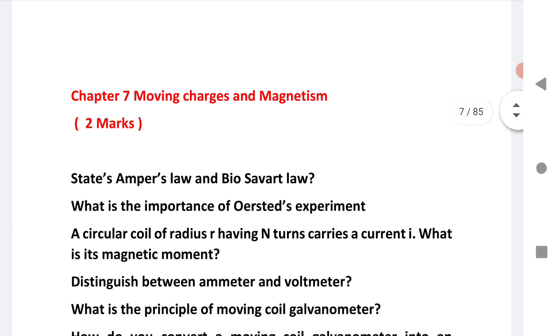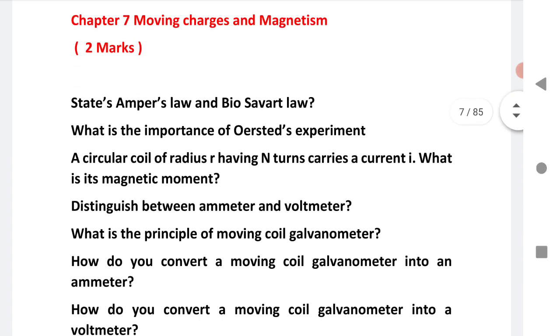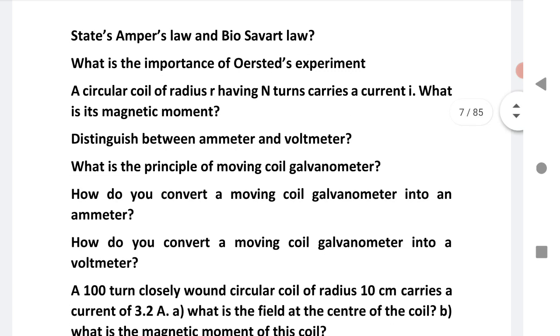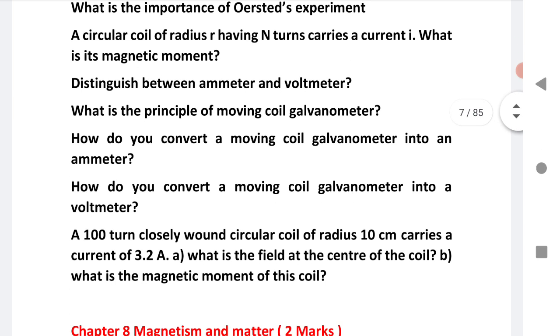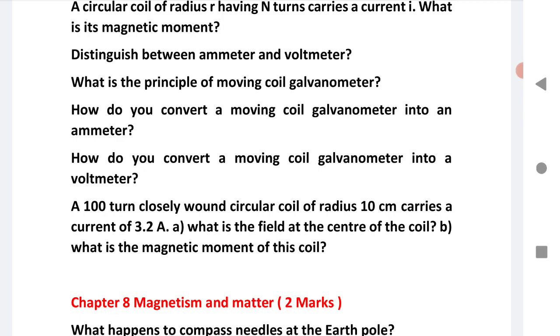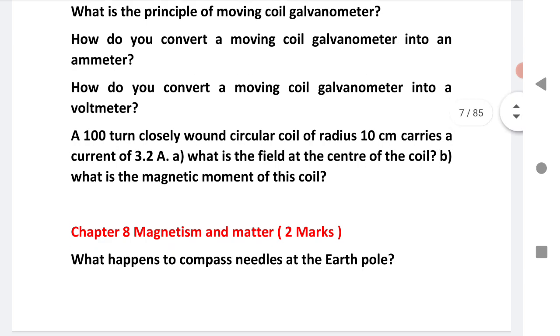Let us go to the next chapter, that is moving charges and magnetism, a very important chapter for two marks. First question is state Ampere's law and Biot-Savart law. Second is what is the importance of Oersted's experiment. Third is circular coil of radius. Fourth is distinguishing between ammeter and voltmeter. Next is principle of moving coil galvanometer. How do you convert moving coil galvanometer into ammeter? This is a very important question - converting galvanometer into ammeter and voltmeter. Out of this, one question I am expecting will come in your board exam. Next is numerical - I have given a hundred turn closely wound circular coil of radius. This is a numerical problem, solve it. Definitely if they ask numerical problems, that will also be helpful for two marks.